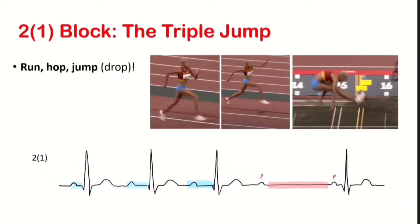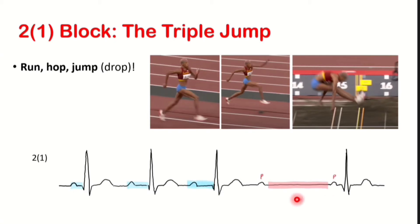So for Mobitz type 1, think of run, hop, and jump. In this rhythm, we can see the PR interval starting normal when she runs, lengthening when she hops, and the QRS dropping when she jumps, leaving us with two P waves with no QRS in between.